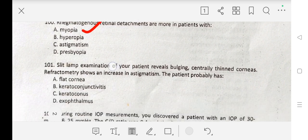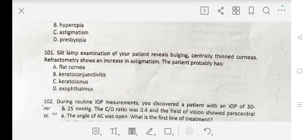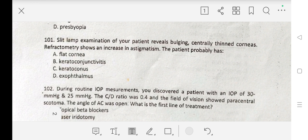Question number 101 is: Slit lamp examination of your patient reveals bulging central thin corneas. Refractometry shows an increase in astigmatism. The patient probably has A. flat cornea, B. keratoconjunctivitis, C. keratoconus, D. exophthalmos. Our correct answer is C. keratoconus.